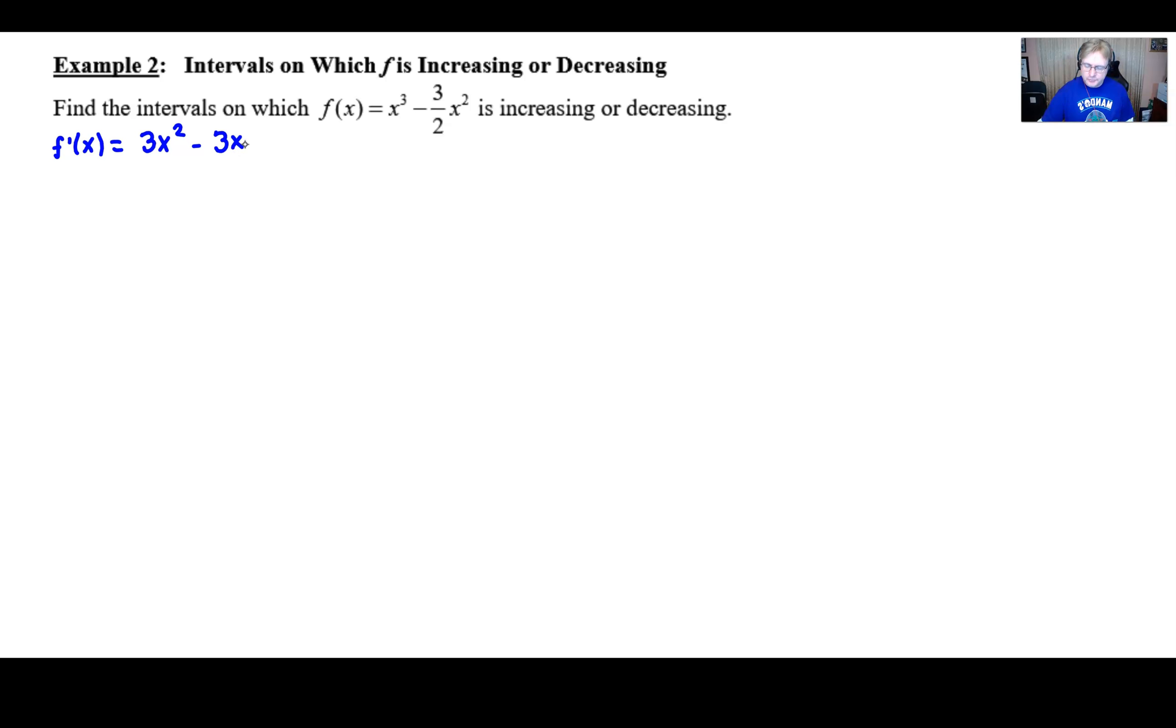Step two, you're going to find critical values. Critical values occur in two different circumstances. If you recall from topic 5.2's lessons, they occur when the derivative is either equal to zero or when the derivative is undefined. So you're going to focus on both of these. Oftentimes, one of them might be sort of obsolete, and I'll go right to that one because it seems that's going to be the obvious one, and that's going to be the undefined part.